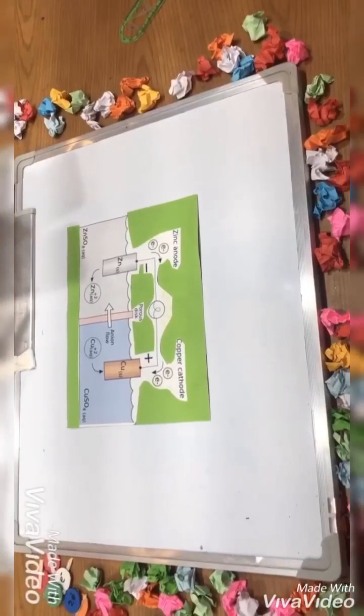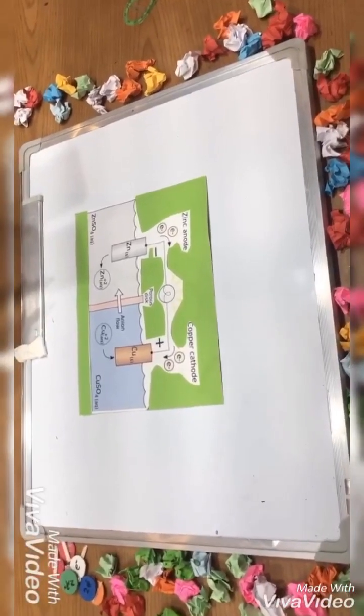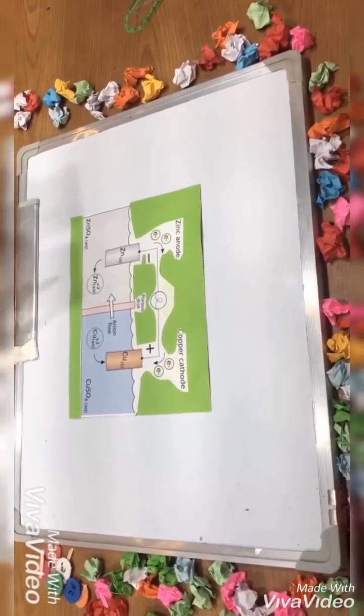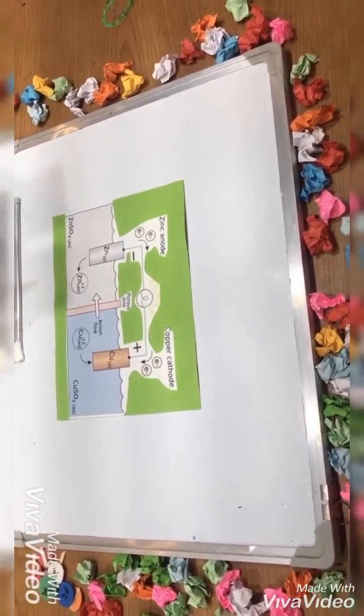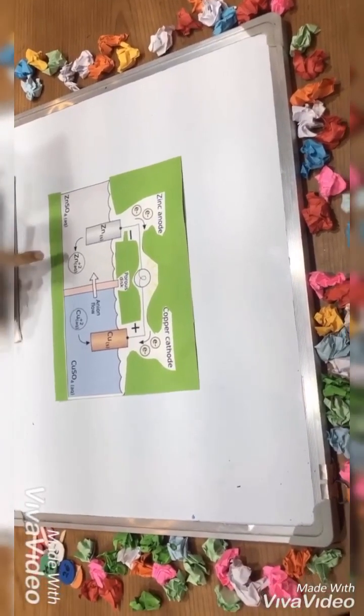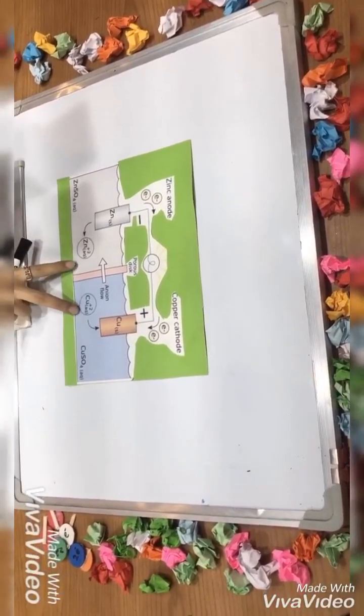The galvanic cell, named after Luigi Galvani or Alessandro Volta respectively, is an electrochemical cell that derives electrical energy from spontaneous redox reactions taking place within the cell.